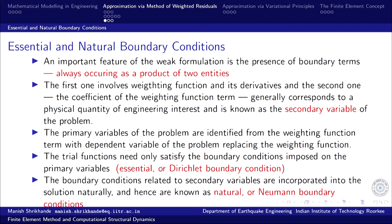In this particular case the primary variable is the basic unknown φ. Earlier, when constructing trial approximations, we talked about an admissible set of functions — the basis functions should be admissible, meaning the trial functions must satisfy the essential boundary conditions. The essential boundary conditions are those imposed on the primary variables of the problem. To identify which boundary conditions are essential and which are natural, we look at the boundary term of the weak formulation.